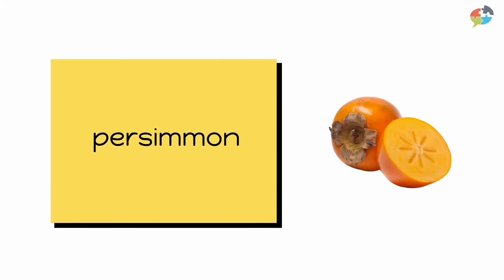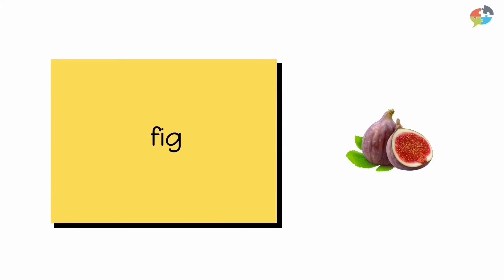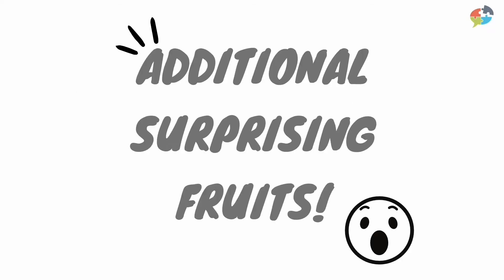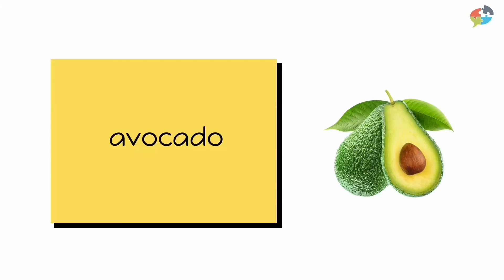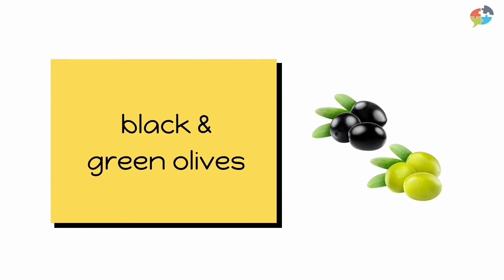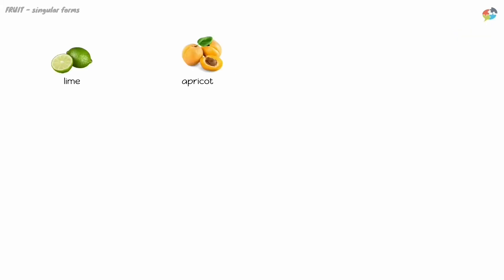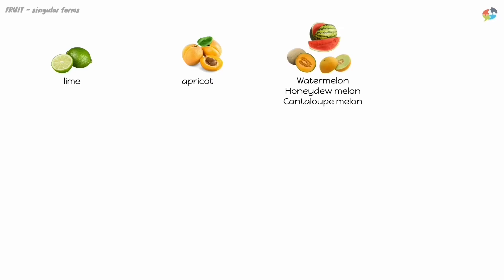Persimmon, persimmon, date, date, fig, fig. Very good. Before we go over those again, there are some fruits to add to the list. Some people might think of them as vegetables, but they are technically fruit: avocado, avocado, pumpkin, pumpkin, black and green olives, black and green olives. Great.